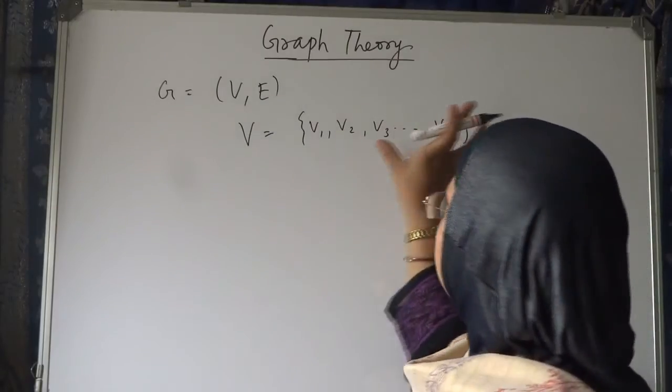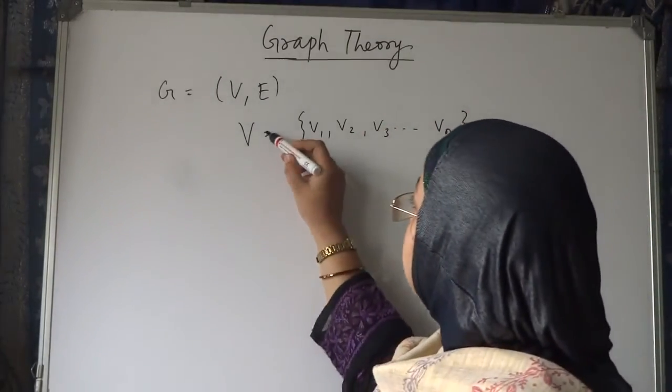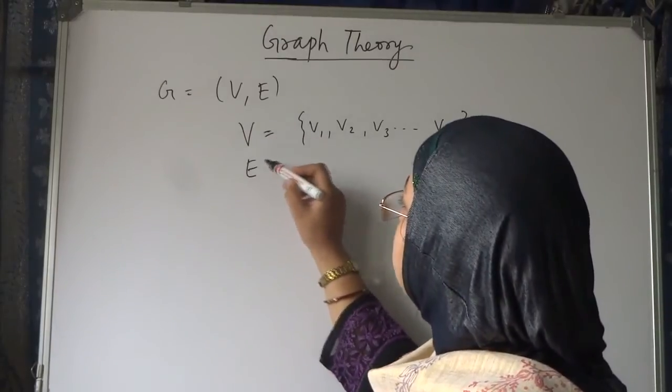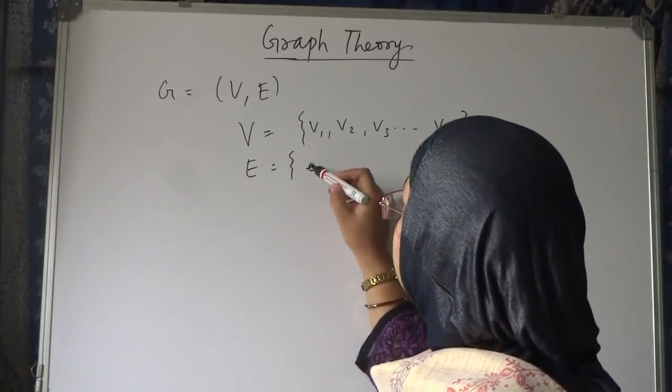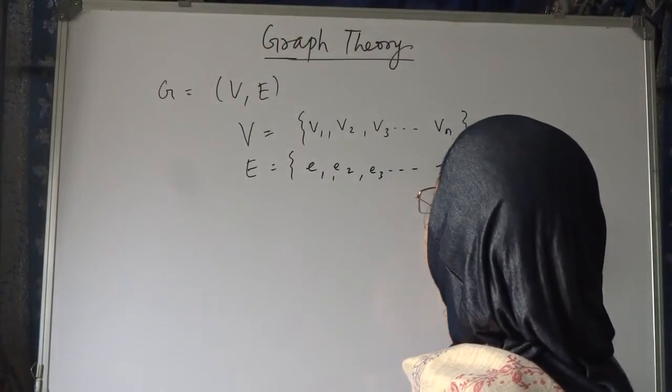Capital V is the set of vertices in the graph, and E is the set of edges in the graph: E1, E2, E3 dot dot dot En.